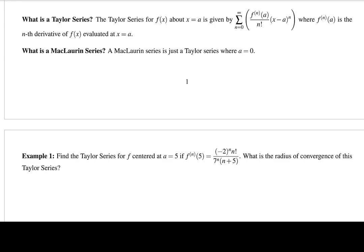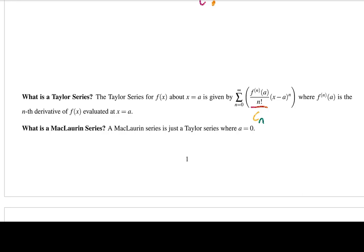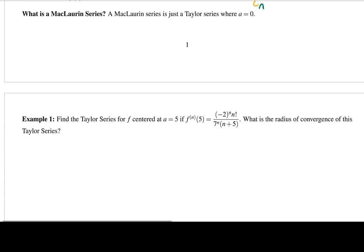This is what leads to what we call Taylor series. A Taylor series replaces the coefficient cₙ with the nth derivative evaluated at a, divided by n factorial, multiplied by (x minus a) to the n. A Maclaurin series is just a Taylor series when a equals 0. So when you take a Taylor series about x equals 0, we call it a Maclaurin series.